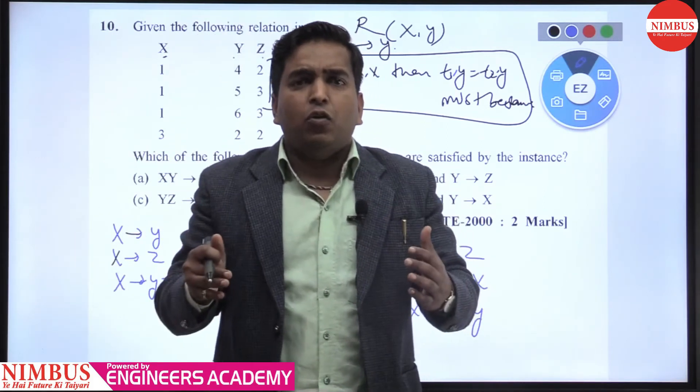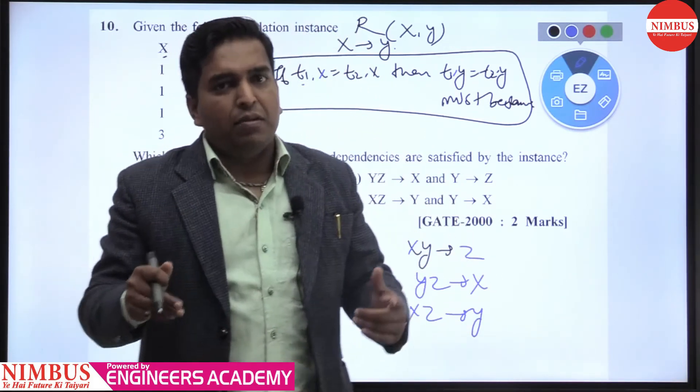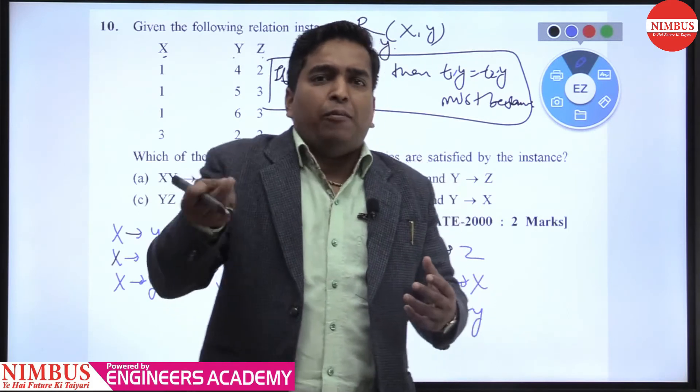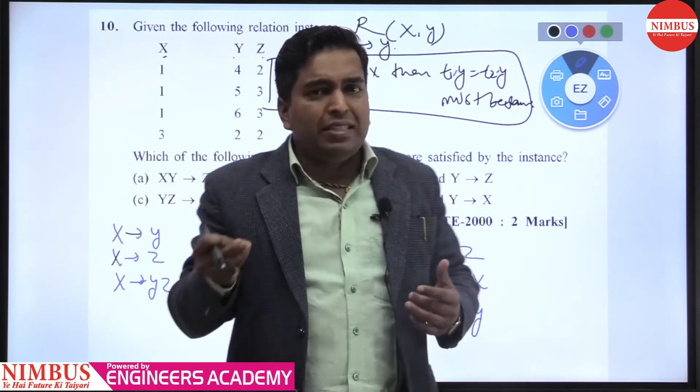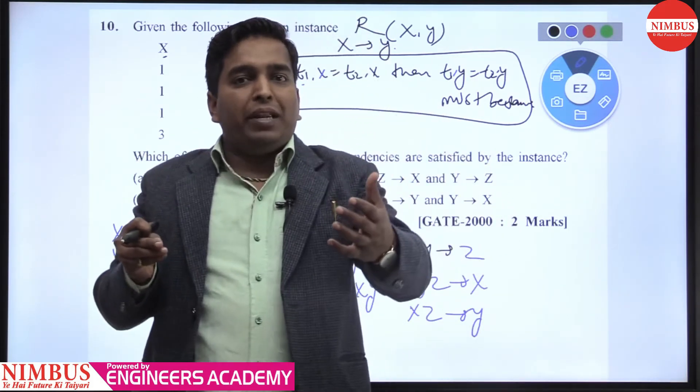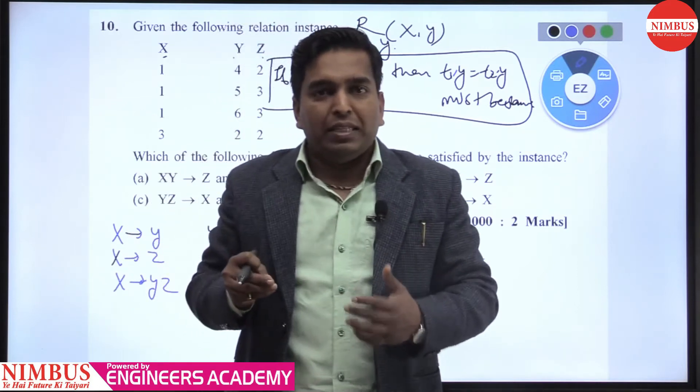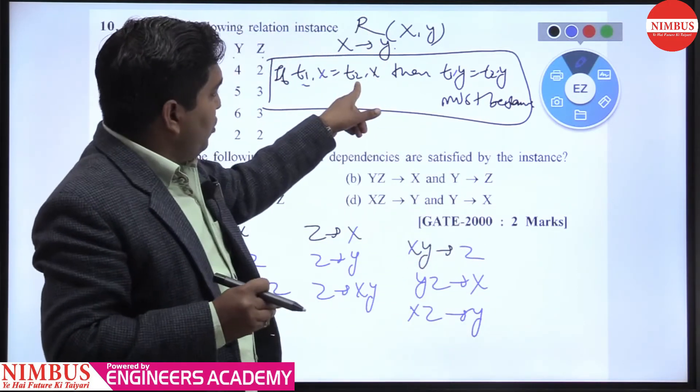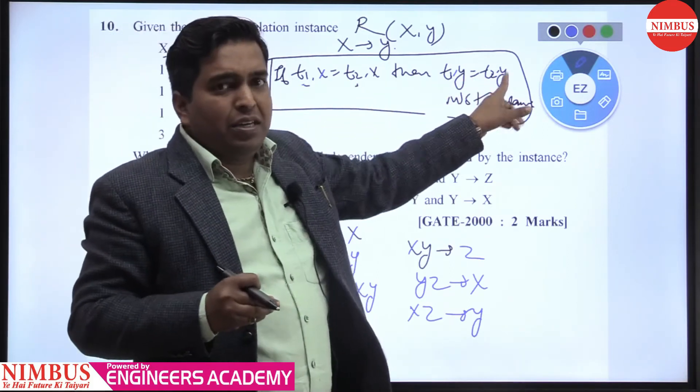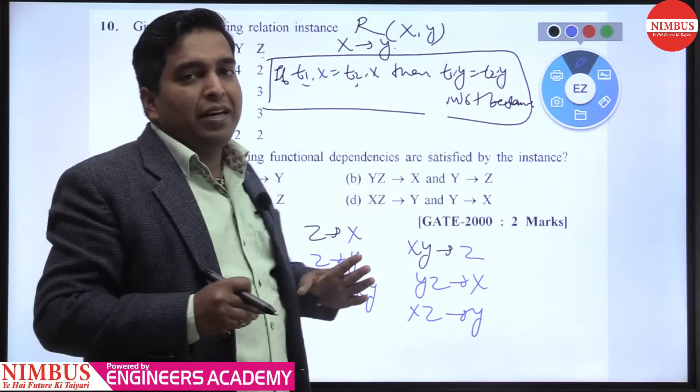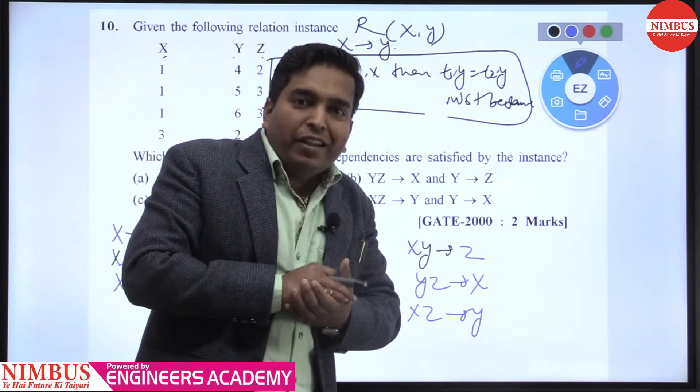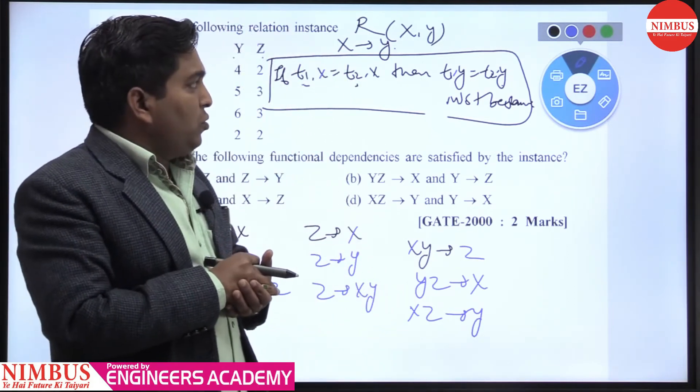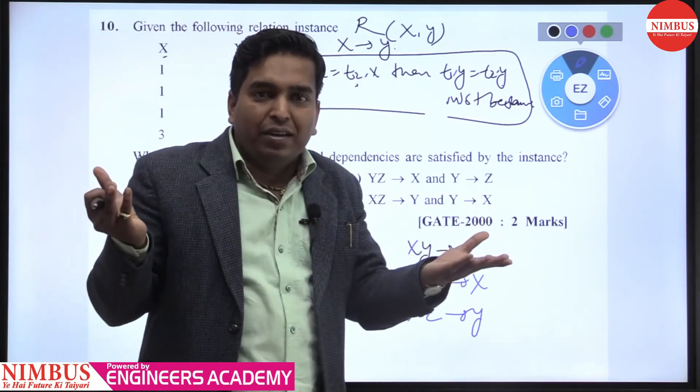You can identify with the help of an example. Suppose your roll number is 11. Whenever you write roll number 11, then your result will be displayed. So it means whenever X value repeats, corresponding Y value must be same. This is the functional dependency definition.